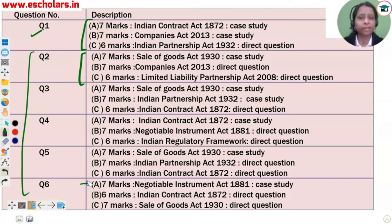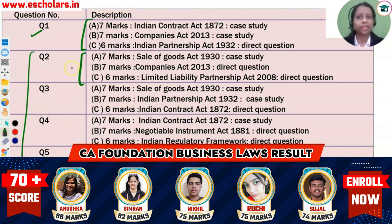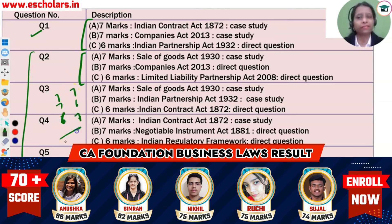Question number 6: A part is 7 marks, B is 6 marks, and C is 7 marks. So for all other questions it is 7, 7, 6 — and question number 6 is 7, 6, 7. That is the only difference.